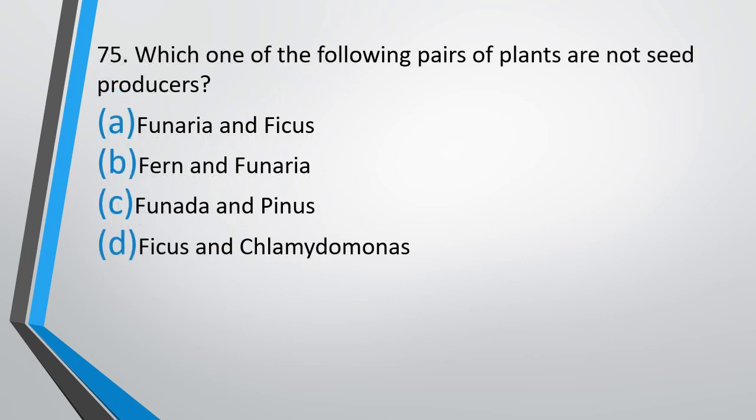Question number 75. Which one of the following pairs of plants do not produce seeds? (A) Funaria and Ficus, (B) Fern and Funaria, (C) Funaria and Pinus, (D) Ficus and Chlamydomonas. The correct answer is option B — fern and Funaria do not produce seeds.